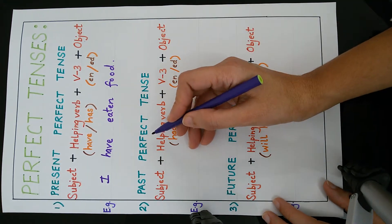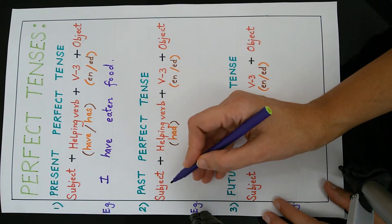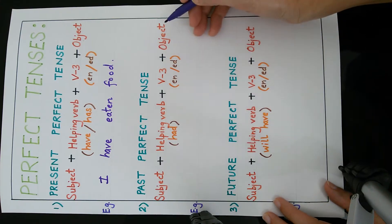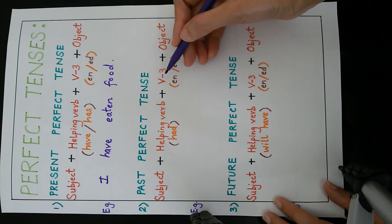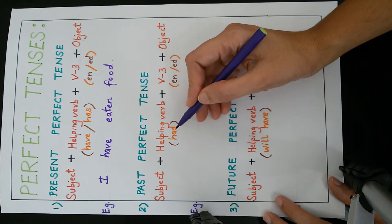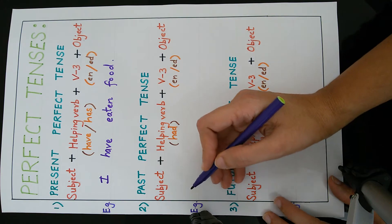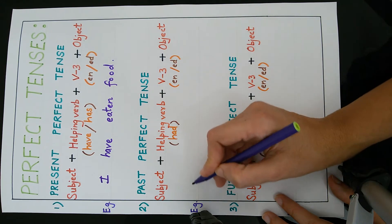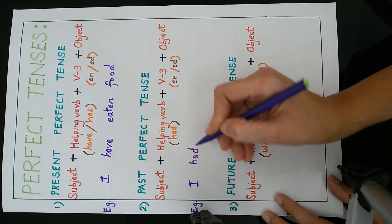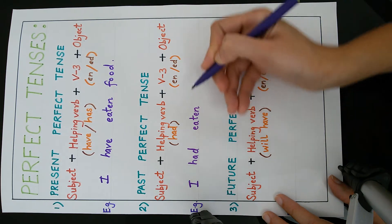Now we come to the second one, past perfect tense. The formula is subject plus helping verb plus V3 plus object. The helping verb is 'had', because this is past tense. Using this formula, the sentence is: I had eaten food.